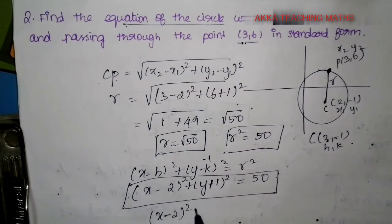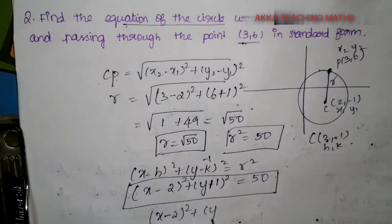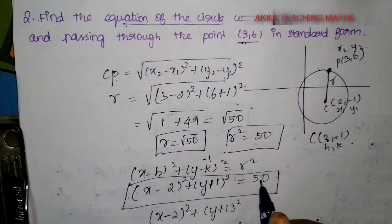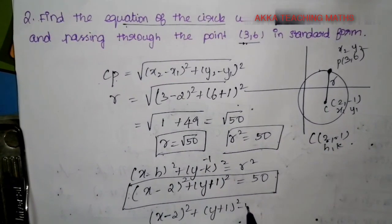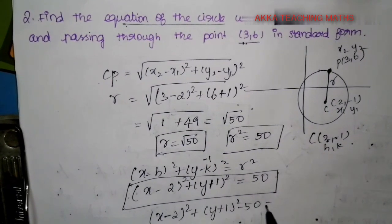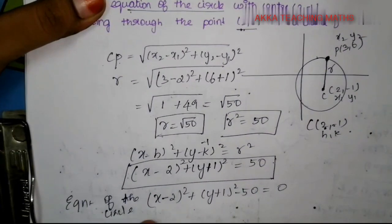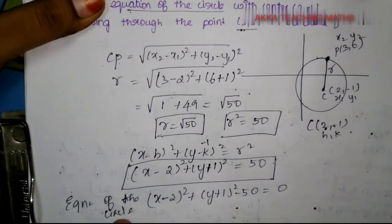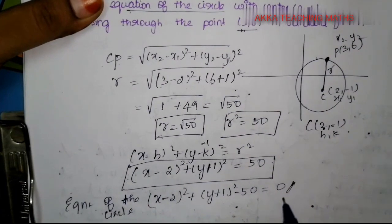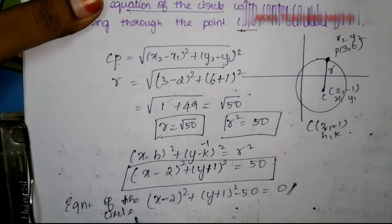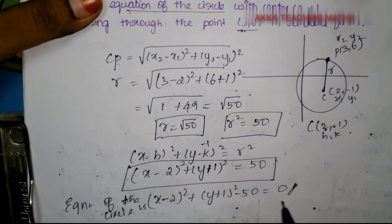Expanding to standard form: (x - 2) squared plus (y + 1) squared equals 50. Moving 50 to the other side: (x - 2) squared plus (y + 1) squared minus 50 equals 0. So this is the equation of the circle. Finally, the equation of the circle is found.